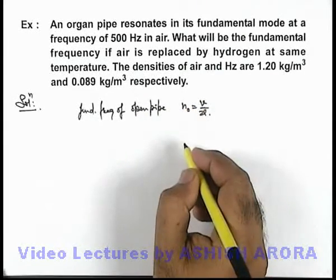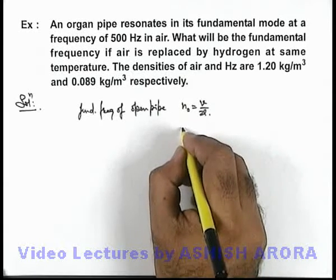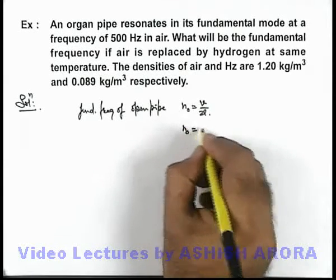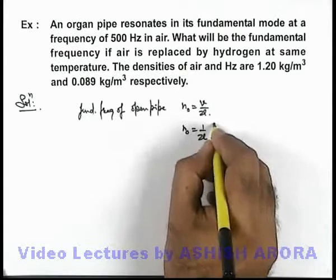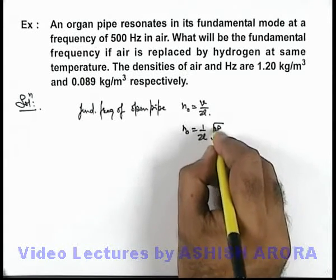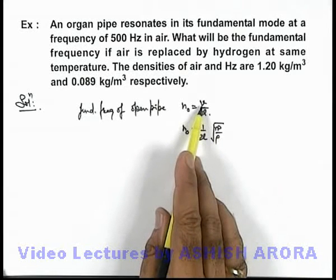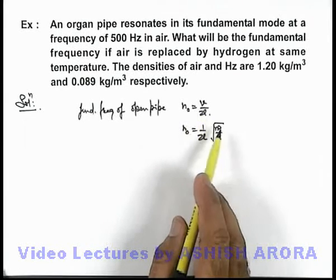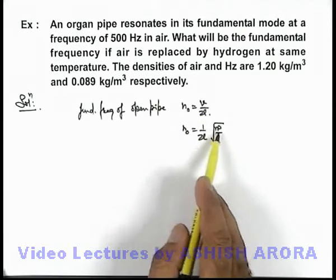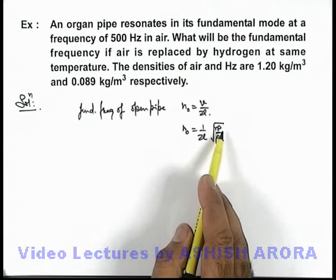This can be written as n₀ equals 1 by 2L root of gamma p by ρ, where the speed of sound in air can be given as gamma p by ρ, where gamma p can be taken as the bulk modulus of the medium.